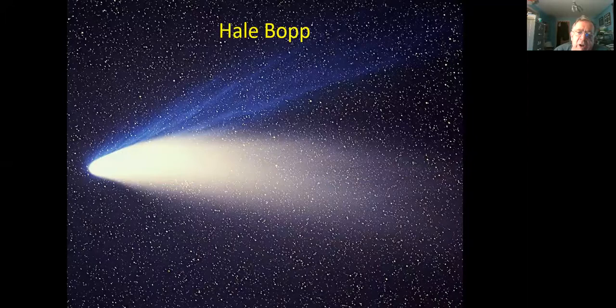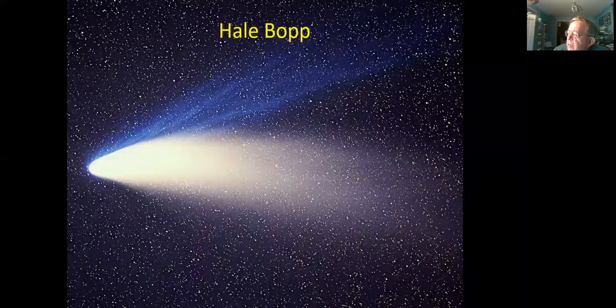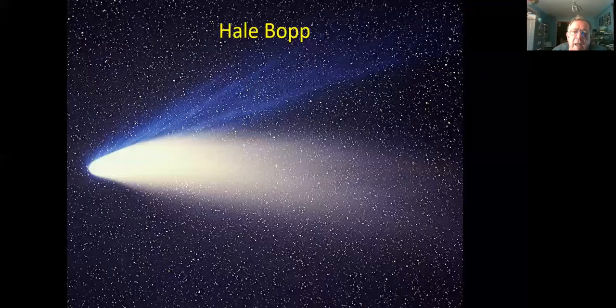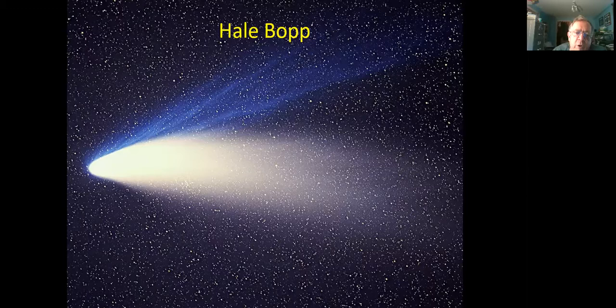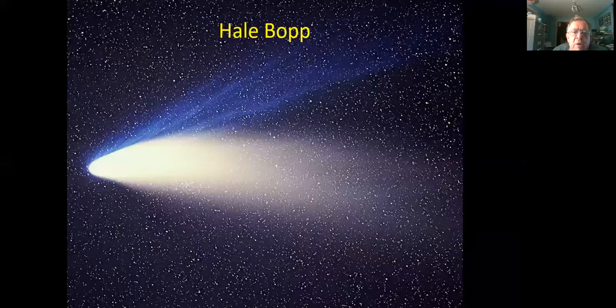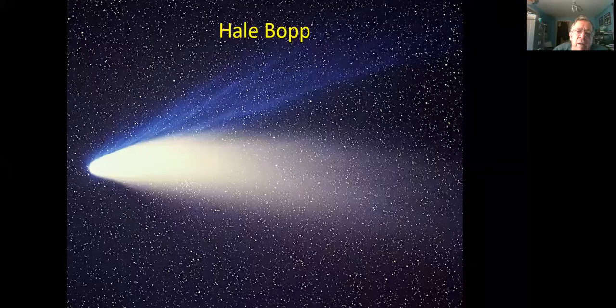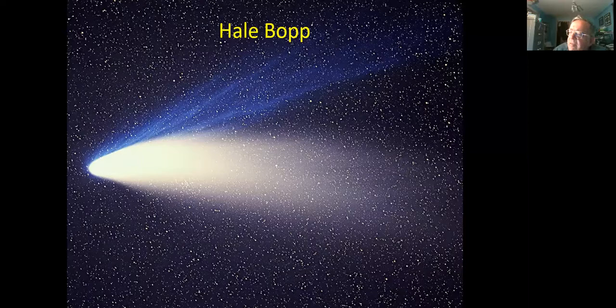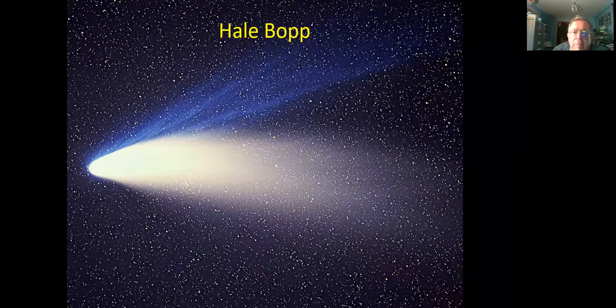Who remembers this comet Hale-Bopp back in the late 90s? It was visible for months on end. Absolutely spectacular with its bright white dust tail and the blue ion tail where the charged particles are being blasted off by the solar wind. The same thing that causes the aurora is at work here, ionizing molecules and then the sun's magnetic field is deflecting the charged particles into a tail that goes in a different direction to the main tail.